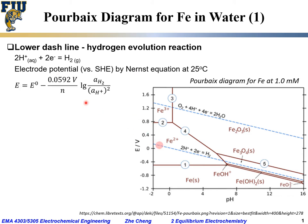From the Nernst equation, the electrode potential for this half-cell reaction is: E = E0 (standard electrode potential) minus 0.0592 volt divided by n (number of electrons transferred), times the log of the product hydrogen gas activity divided by reactant proton activity squared, due to the stoichiometry factor of two. This gives the Nernst equation for the electrode potential versus SHE.